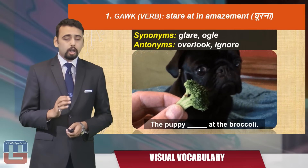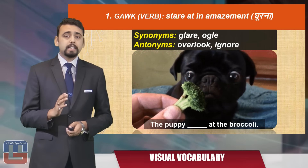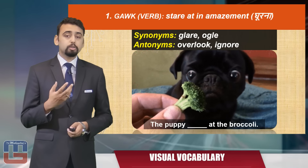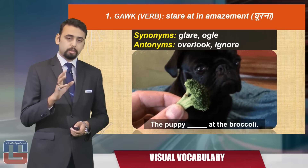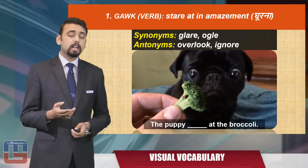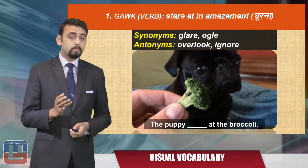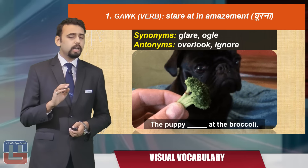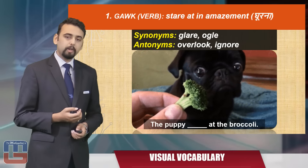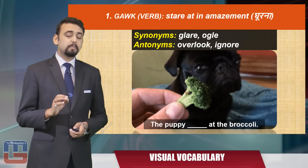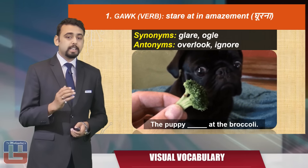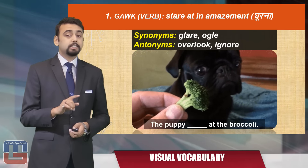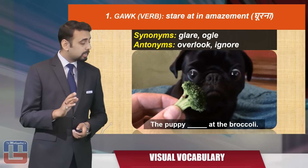Here's the first word of the day: 'gawk,' which is a verb meaning to stare at in amazement. The synonyms are 'glare' or 'ogle,' and the antonyms are 'overlook' or 'ignore.' Here's an image — the puppy stared in amazement at the broccoli. Using 'gawk,' the sentence becomes: 'The puppy gawked at the broccoli.'